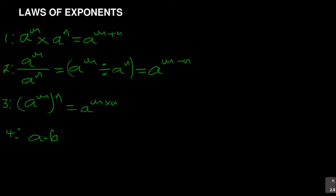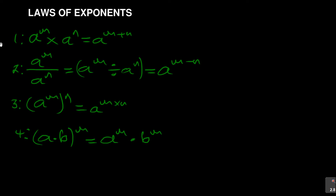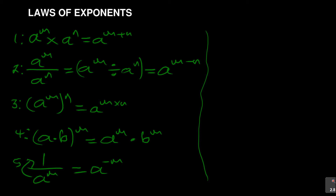Law four says: if you have a times b, all to the power of m, this becomes a to the power m times b to the power m. Another law: one over a to the power m is the same as a to the power negative m — that's still division, taking it to the top. Also, a to the power of zero equals one for any number, and one to the power of anything still gives you one.